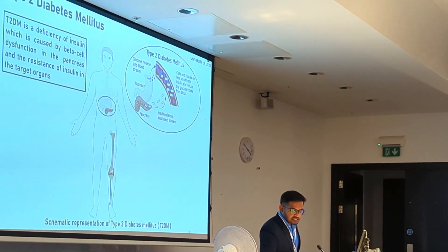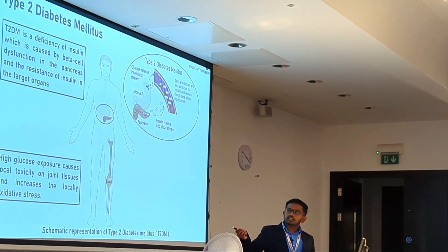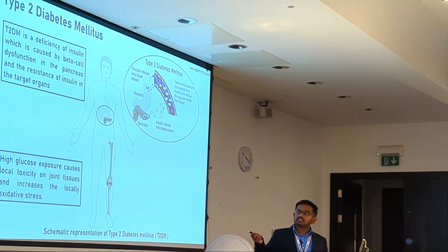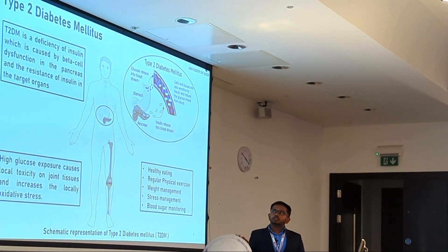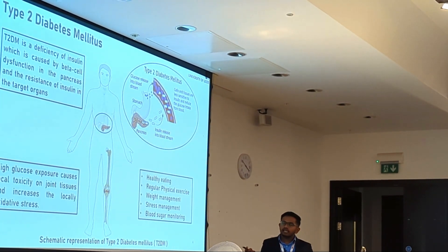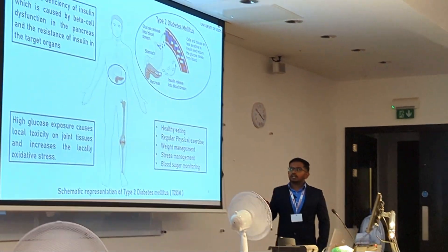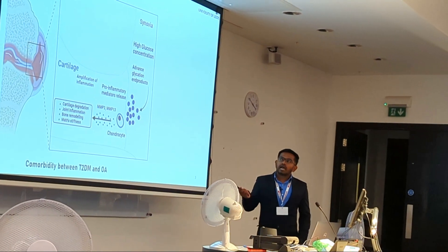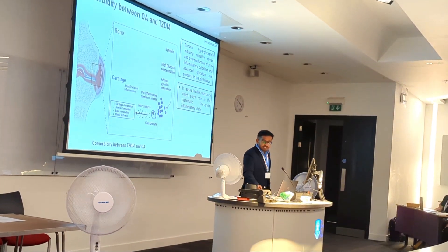Basically, this is type 2 diabetes. The high glucose concentration causes local toxicity in the blood and in the joint tissue, and increases local oxidative stress. The main solutions for diabetes are temporary: eating healthy, regular physical exercise, weight management, stress management, and blood sugar monitoring.